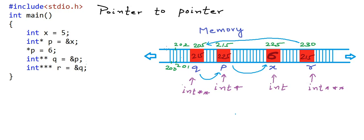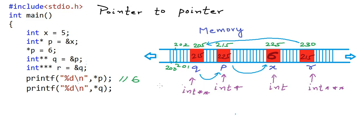Now I have translated my previous rough code into a working C program. Let us assume this program is working as per the memory sketch shown on the right, where x, p, q, and r are allocated the addresses we showed. I will write some print statements and you need to guess the output. The first print statement: *p — this should be simple. *p is the value stored at the address in p, so this will be 6. Next, *q: the value at the address stored in q. The address stored in q is 215, which is the value of p, so *q will be 225.